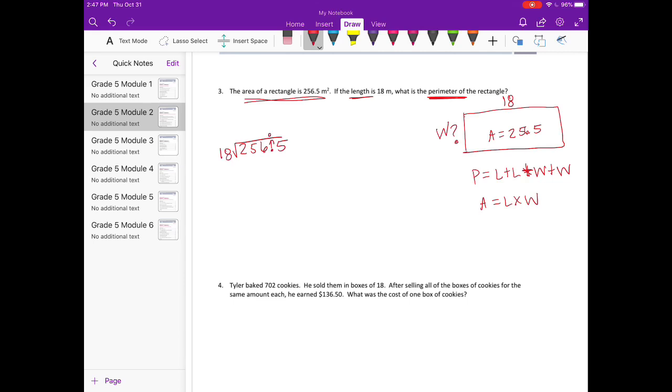Bring that decimal point up. 18 can't go into 2, it could go into 25 once. 25 minus 18 is 7. Bring down the 6. 18 can go into 76. Let's try 18 times 4. Yep, 4 times. That's 72. And bring down the 5.